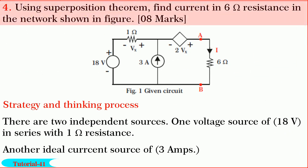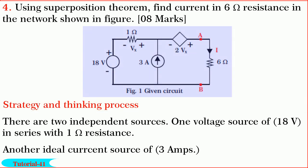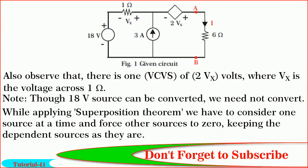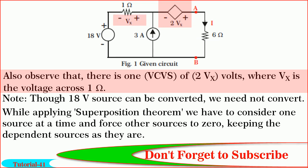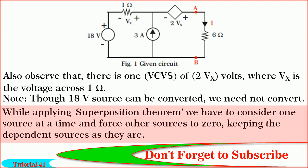Friends, finally let us solve the question on superposition theorem. In this problem, we are required to find current I in the 6 ohm resistance using superposition theorem. Observe the given network. There are two independent sources: one voltage source of 18 volts in series with 1 ohm, and another ideal current source of 3 amperes. Also there is one voltage-controlled voltage source of 2·Vx volts, where Vx is the voltage across the 1 ohm resistance. Note that dependent sources should be kept as they are while applying superposition theorem.